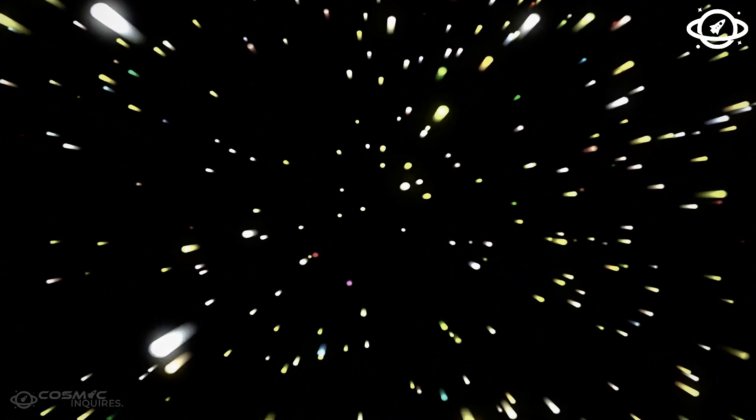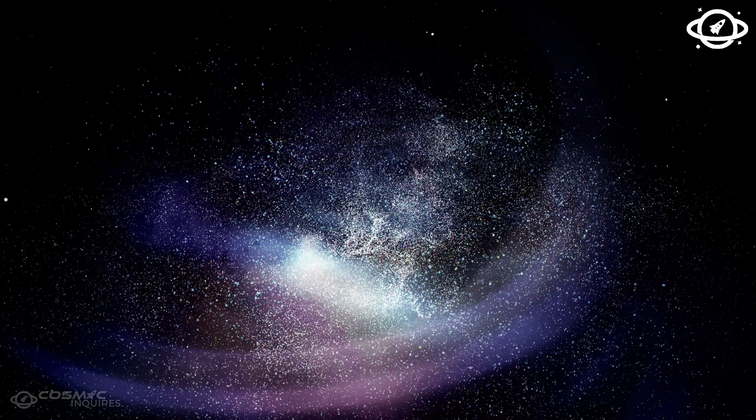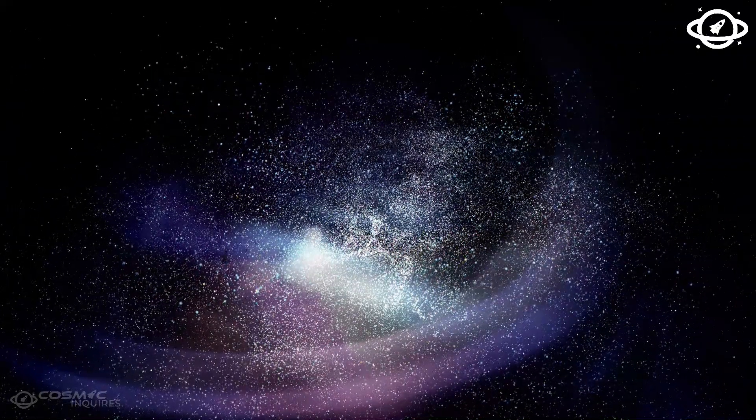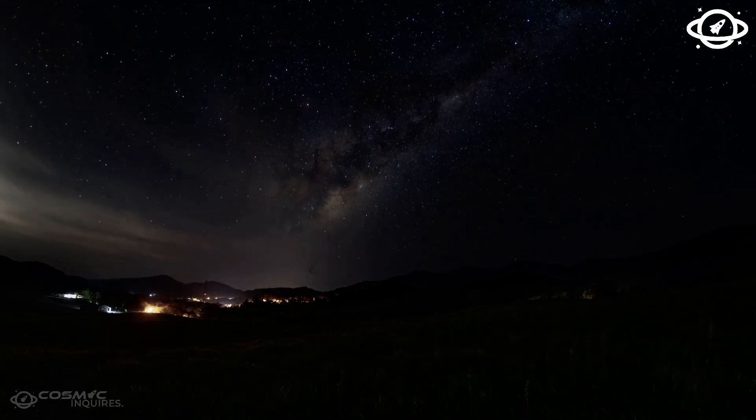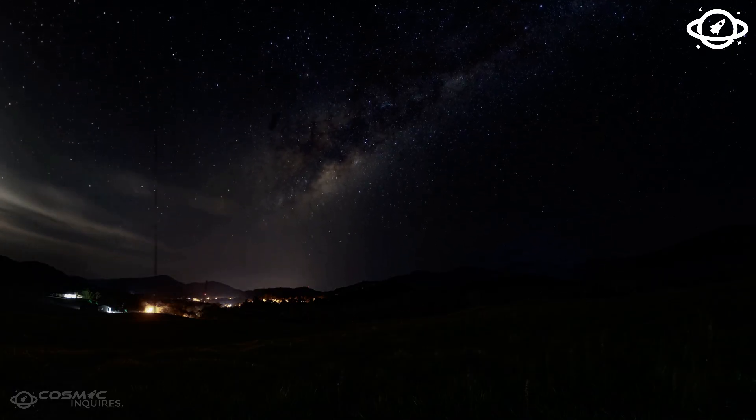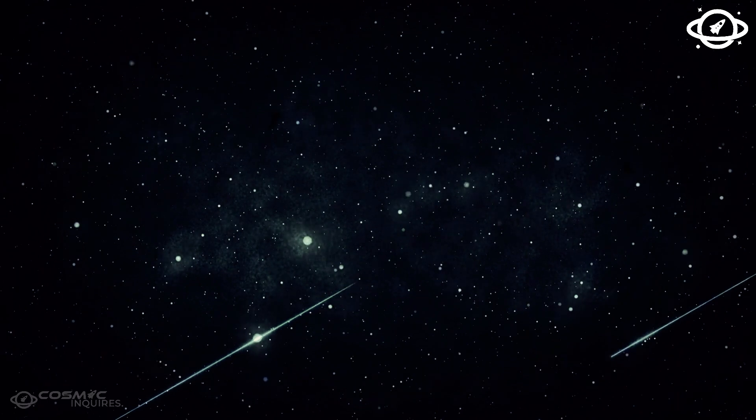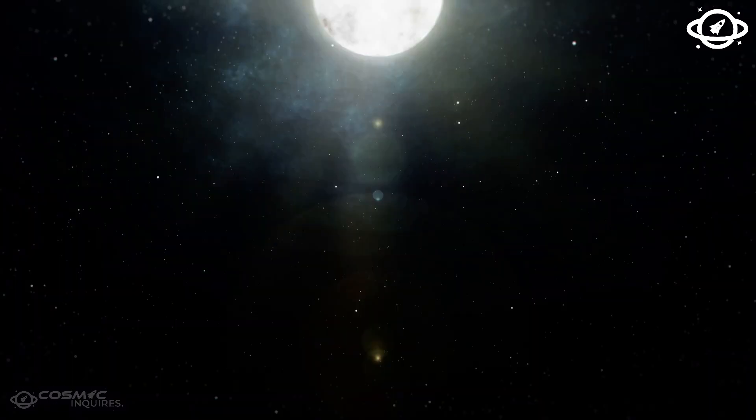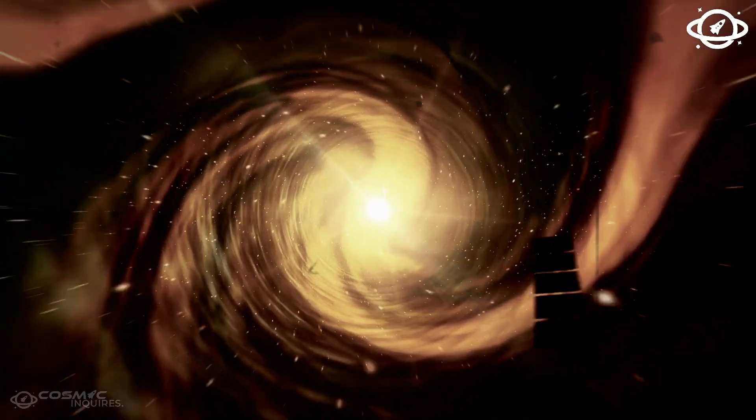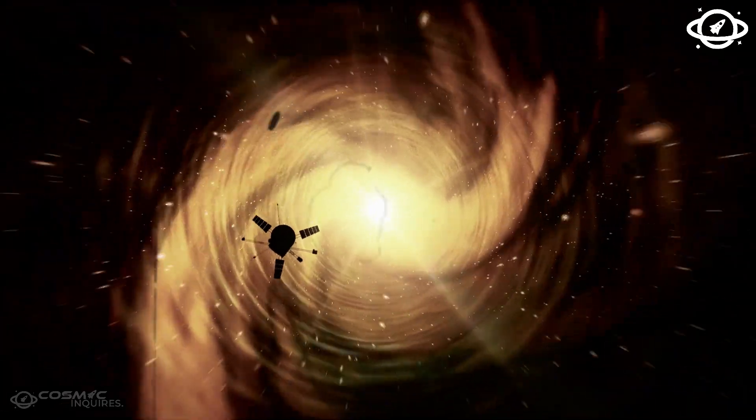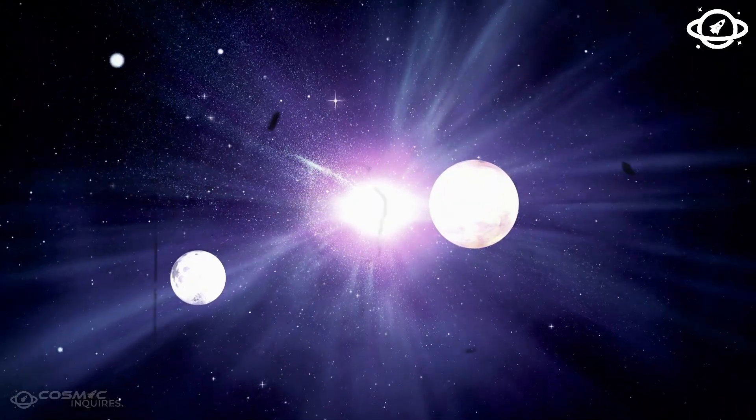There's no visible protoplanetary disk, no leftover material, no gravitational explanation for how such a massive world could form so far out, so quickly, and remain stable. Some researchers have begun to speculate: What if this planet isn't a product of its current system at all? What if it's a remnant of a previous cycle, a relic from a star system that came before, somehow transplanted, reused, or deliberately placed? For now, there are no answers. Just a planet glowing at over 1000°C, suspended in a system that shouldn't have had time to build it.